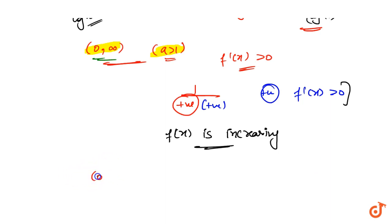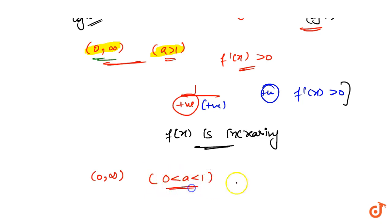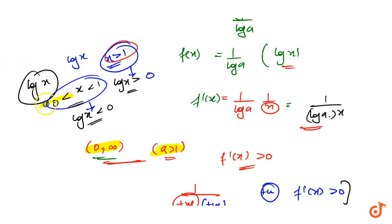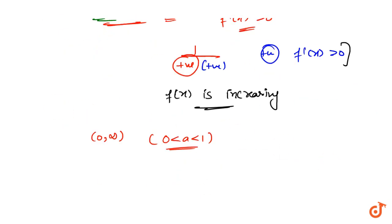The other condition is that f(x) is decreasing on the interval (0, ∞) if a is from 0 to 1. Now we check: if a is between 0 and 1, then log(a) is negative.